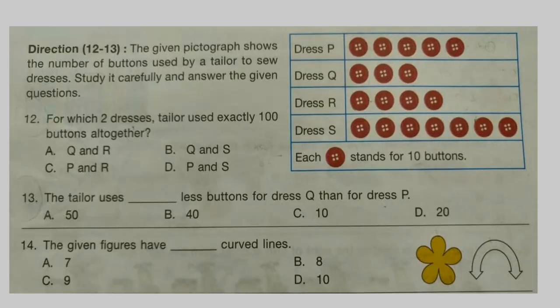Questions 12 to 13: The given pictograph shows the number of buttons used by a tailor to sew dresses. Study it carefully and answer the given questions. Question 12: For which two dresses did the tailor use exactly 100 buttons altogether? Question 13: The tailor uses dash less buttons for dress Q than for dress P.